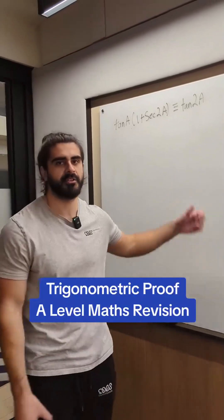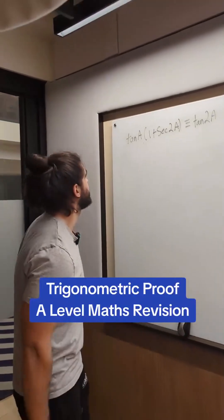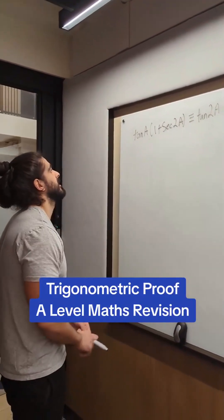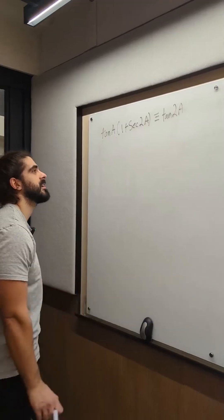You missed trigonometry and all that, so let's prove this. Prove tan a over 1 plus sec 2a is equivalent to tan 2a.